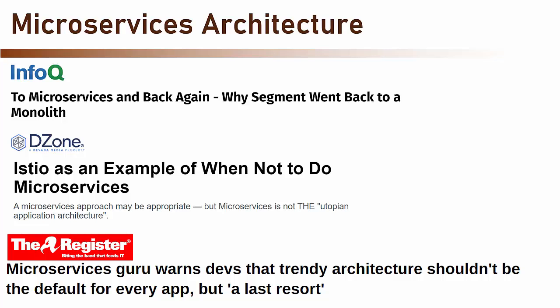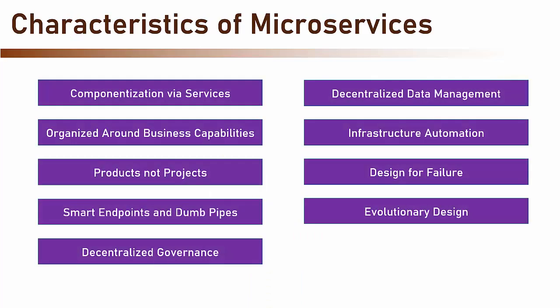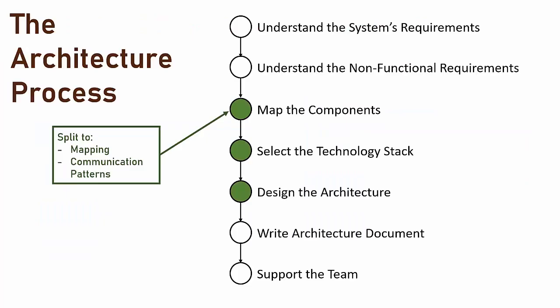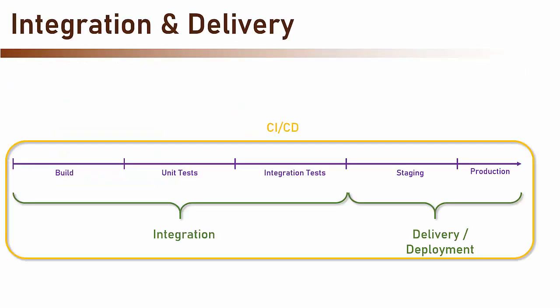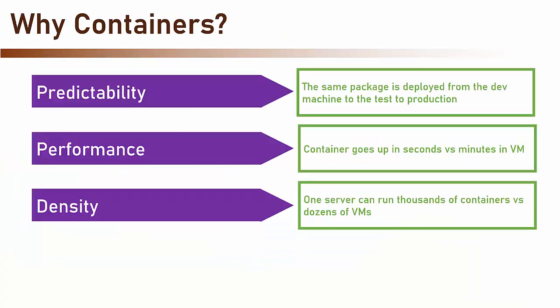Until now, there was no single course that covered all aspects of microservices — but this course does just that. We will learn all there is to know about microservices. We will start from the basics: why do we need microservices, what are the 9 attributes of microservices, and what is the architecture process. We will continue with more advanced concepts such as CI/CD, Service Mesh, Containers, and more.